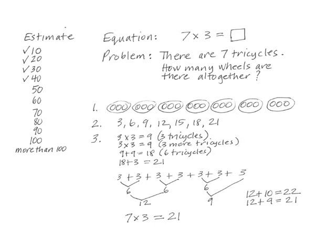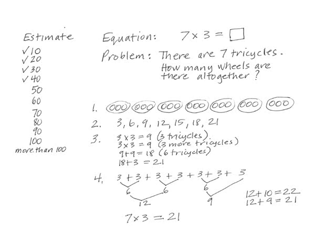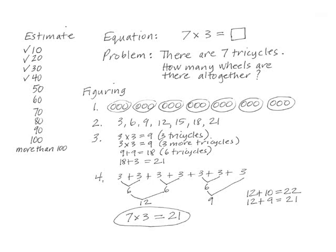I wrote a three. Then Ruthie had the idea of breaking the problem into parts, I said, and we got twenty-one again. I wrote a four, and finally we added seven threes. I circled the equation. Every way produced the same answer of twenty-one.